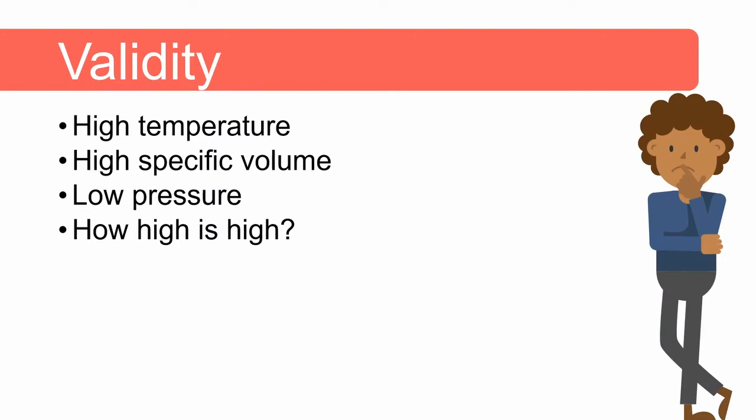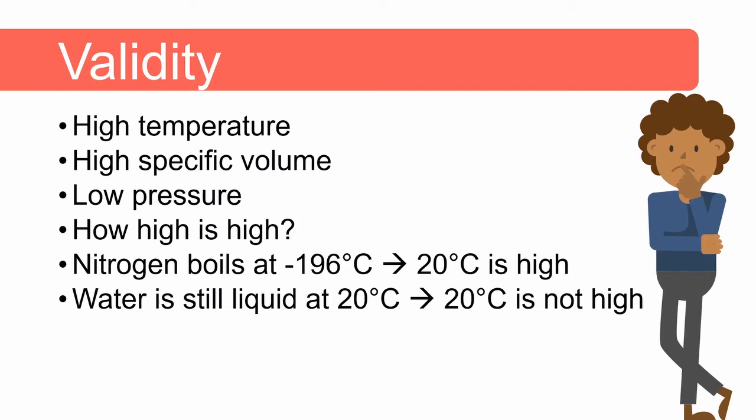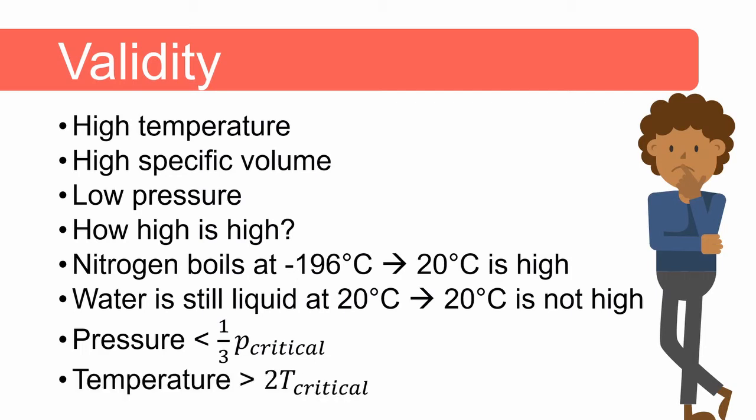But then this begs the question, how high is high? For nitrogen, which boils at minus 196 degrees, 20 degrees is high. But then when we look at water, water is still liquid at 20 degrees Celsius. So for water, 20 degrees is not really that high temperature. Now, as a rule of thumb, we can assume ideal gas behavior as long as the pressure at which this gas is, is less than one third of the gas's critical pressure, and the temperature is at least twice the gas's critical temperature. In everyday use, oxygen and nitrogen meets this high temperature and low pressure criteria. And we usually assume that air is an ideal gas and therefore obeys the ideal gas law as well. At very, very low pressures, less than 0.01 times the critical pressure, it is generally safe to assume ideal gas behavior at all temperatures.